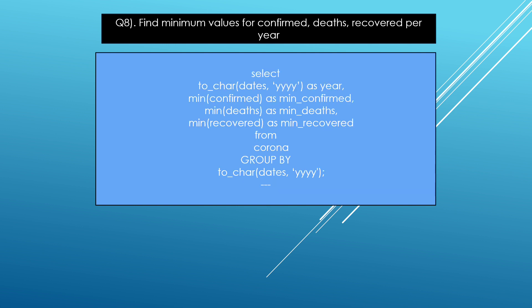The next question is: find the minimum values for confirmed, deaths, and recoveries per year. This is similar to the previous question but uses minimum values. I used MIN(confirmed), MIN(dates), and MIN(recover). The change is per year, so I declare YEAR(dates) as year and use GROUP BY.